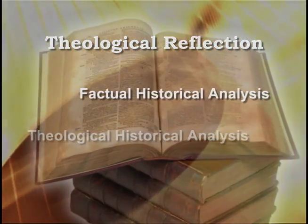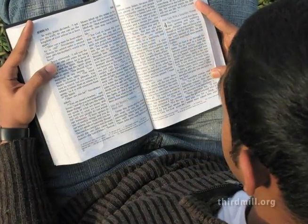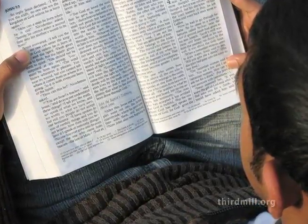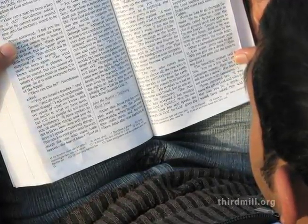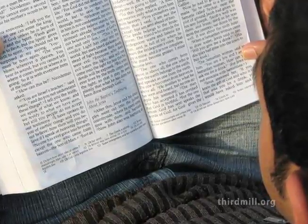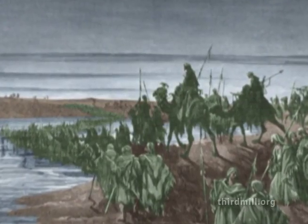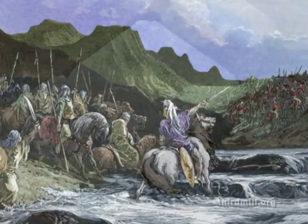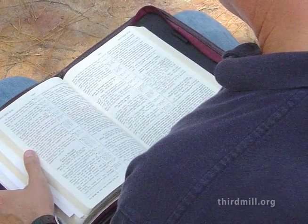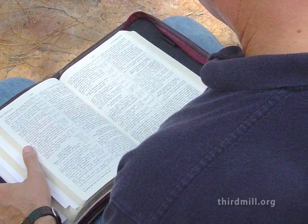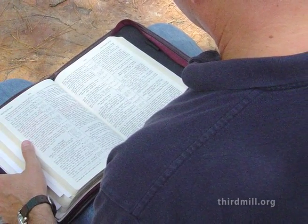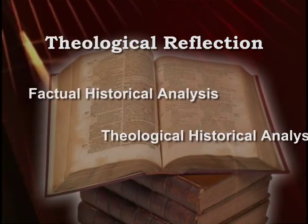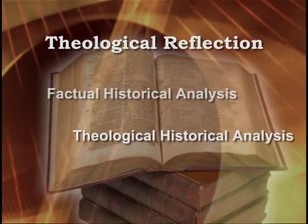Modern readers of the Bible often take a factual approach to biblical history, concerned with how the events reported in Scripture fit within the larger environment of the ancient Near East — questions like the date of the Exodus, the historical circumstances that gave rise to Israel's monarchy, and evidences of certain battles. The goal of factual historical analysis is to establish a reliable account of the facts of history by combining what we learn from Scripture with the data we gather from extra-biblical sources. As important as such factual concerns may be, biblical theology is more concerned with theological historical analysis.